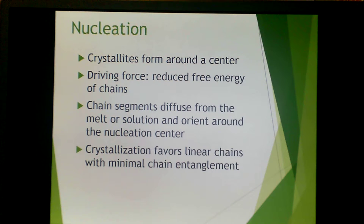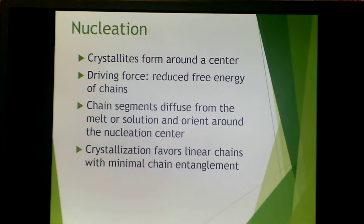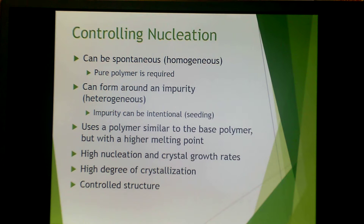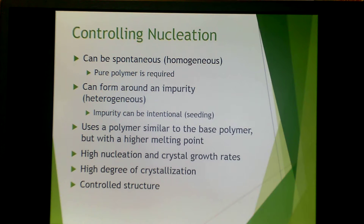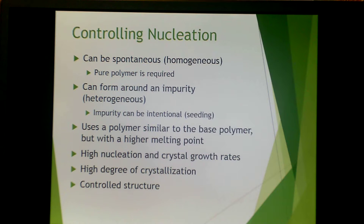Nucleation is an important force in crystallinity. Crystallites will form around a nucleus or center, driven by the reduced free energy of chains. Chain segments diffuse from different parts of the solution and orient around a nucleating center. Crystallization favors linear chains with minimal chain entanglement. Nucleation can be spontaneous — folding over of polymer creates a homogeneous nucleation center, which requires very pure polymer. Nucleation can also form around an impurity, known as heterogeneous nucleation. When intentional, this is called seeding, using a bit of polymer similar to the base polymer but with a higher melting point. High nucleation and crystal growth rates are advantageous for achieving a high degree of crystallization and controlled structure.